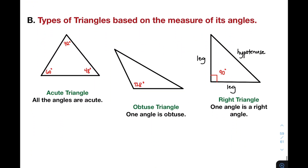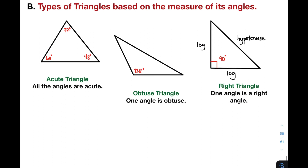Let's move on with the next classification of triangles — type of triangles based on the measure of its angles. You're familiar with the different types of angles, like acute angle, wherein the measurement is greater than 0 but less than 90 degrees. You're also familiar with right angles, wherein the measurement of the angle is exactly 90 degrees. And you're also familiar with obtuse angle, wherein the measurement is greater than 90 but less than 180 degrees.